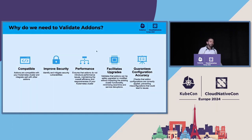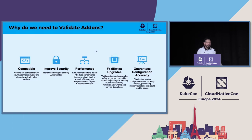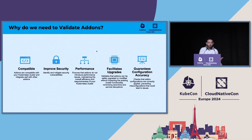The first reason is compatibility. When you deploy these add-ons, you need to make sure they're compatible with, for example, the Kubernetes version. As Kubernetes progresses, APIs might change, so things can be different. You also want to improve security — identify possible vulnerabilities and make sure you're not putting things at risk. For performance, you want to make sure you're not exhausting your resources; for example, if you deploy something with no CPU or memory limits, that could be an issue — so when we validate, we check for those things.